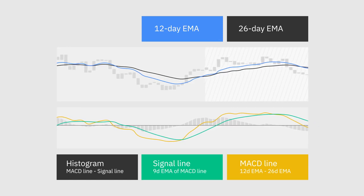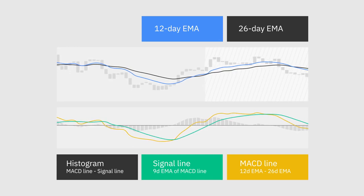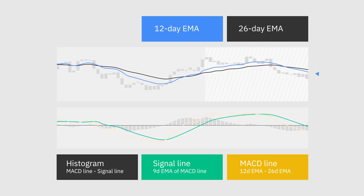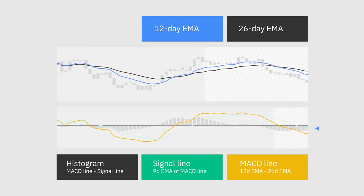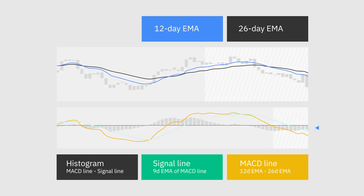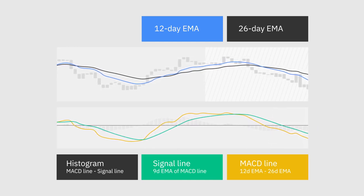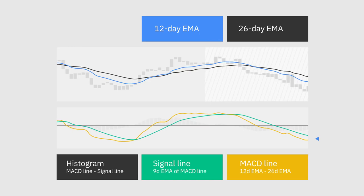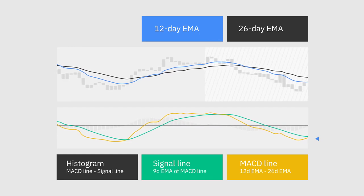The MACD indicator consists of three elements moving above and below the center line: the MACD line, the signal line, and the histogram. The MACD line helps determine upward or downward momentum by measuring the gap between two exponential moving averages. The signal line is usually a nine-period EMA of the MACD line — a nine-day EMA on daily charts, a nine-hour EMA on hourly charts, and so forth. The MACD histogram is a graphical representation calculated based on the differences between the other two lines, displayed as a bar graph, making it visually easier to read and interpret.